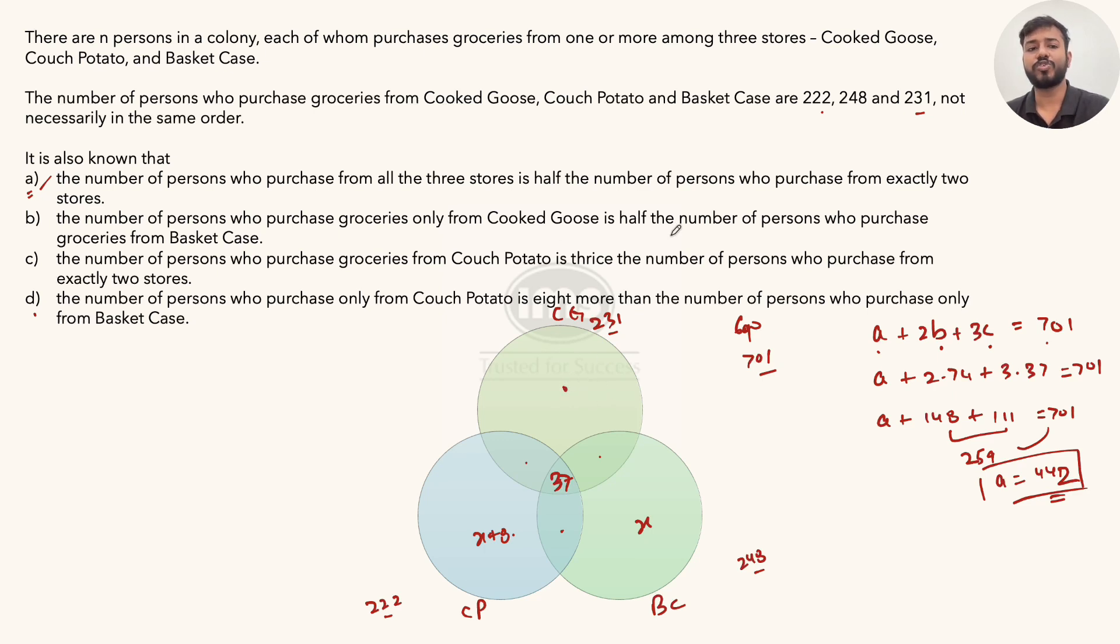One piece of information we haven't utilized. The number of persons who purchase from only Cooked Goose is half the number of persons who purchase groceries from Basket Case. Basket case's total is 248. So this only Cooked Goose will become 124. Now, 124 plus x plus 8 plus x equals 442. So 2x plus 132 equals 442. That means 2x is 310, and x would be 155. So this x would be 155, and x plus 8 would be 163.